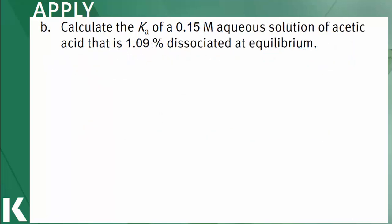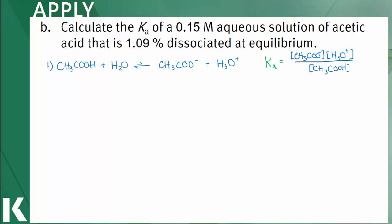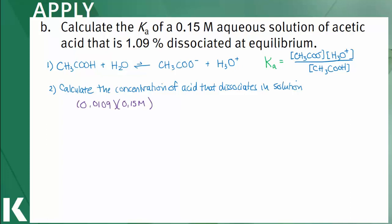The second applied question asks for the Ka given a concentration of acetic acid and the percent dissociated at equilibrium, so this question involves the second method described earlier. The first step is always the dissociation reaction and the Ka expression, which is the same as the earlier question. Next, we calculate the concentration of acid that dissociates by converting the percentage into a decimal — 0.0109 — and multiply by the original concentration of 0.15 M to give us 1.635 × 10⁻³.